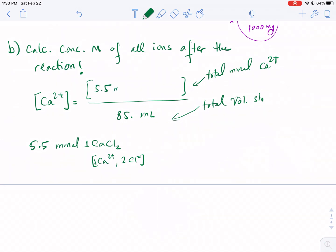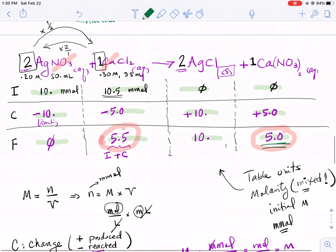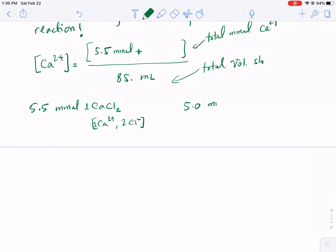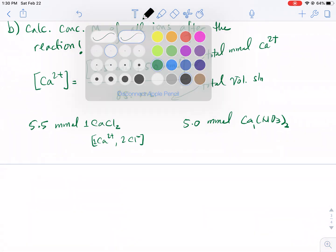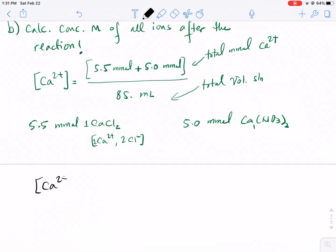The other product that we had is 5 millimoles of calcium nitrate. So 5.0 millimoles of calcium nitrate, and using the same logic, because the ratio of calcium to the compound is 1 to 1, you have 5 millimoles of calcium. So let's do the numerator, which is 10.5 divided by 85. It's 0.12, so my answer of calcium ion concentration is 0.12 moles per liter.